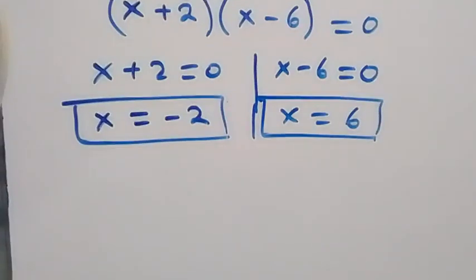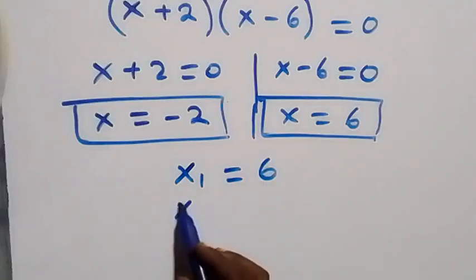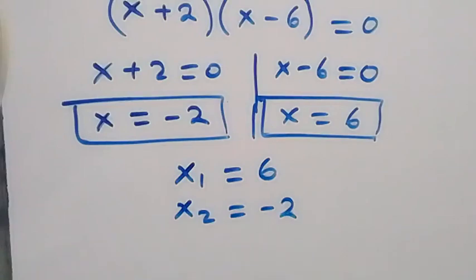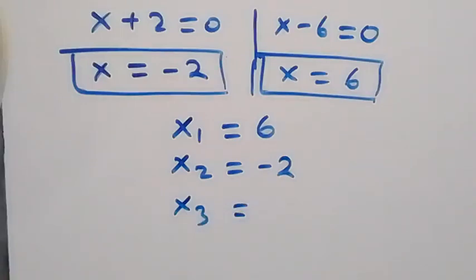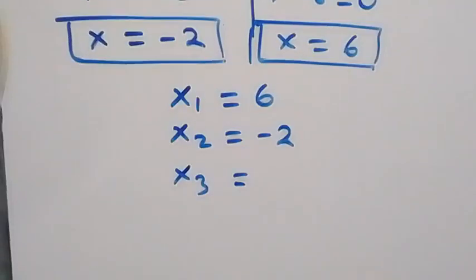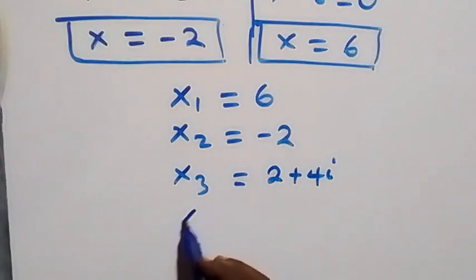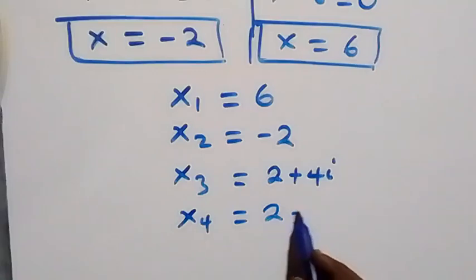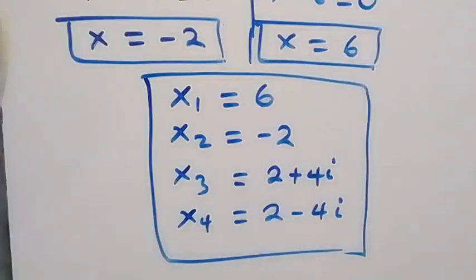We can now list out all four solutions together. x1 equals 6, x2 equals minus 2, x3 equals 2 plus 4i, and x4 equals 2 minus 4i. So we have four solutions altogether: two real solutions and two complex solutions. Thank you for watching us here at Master T Math Class.